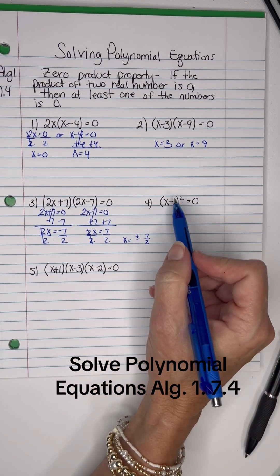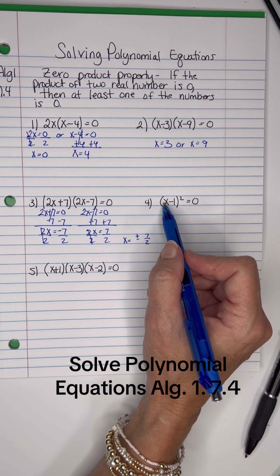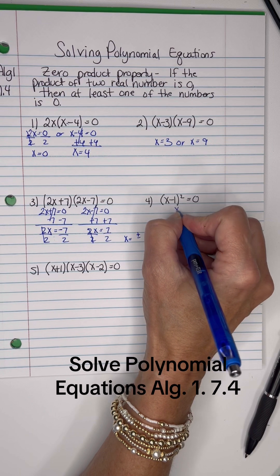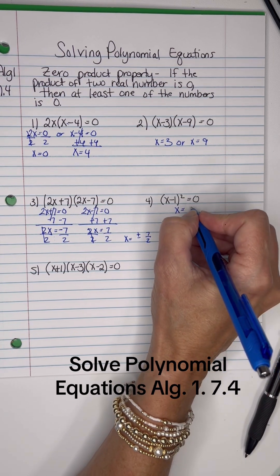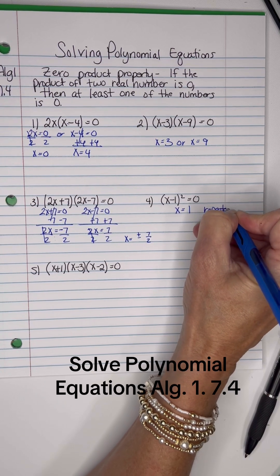And then on this one, we have the same thing twice. So we're going to call this a repeated root. X minus 1 times X minus 1 equals zero. So X will equal positive 1, and it will be called a repeated root, meaning it shows up twice.